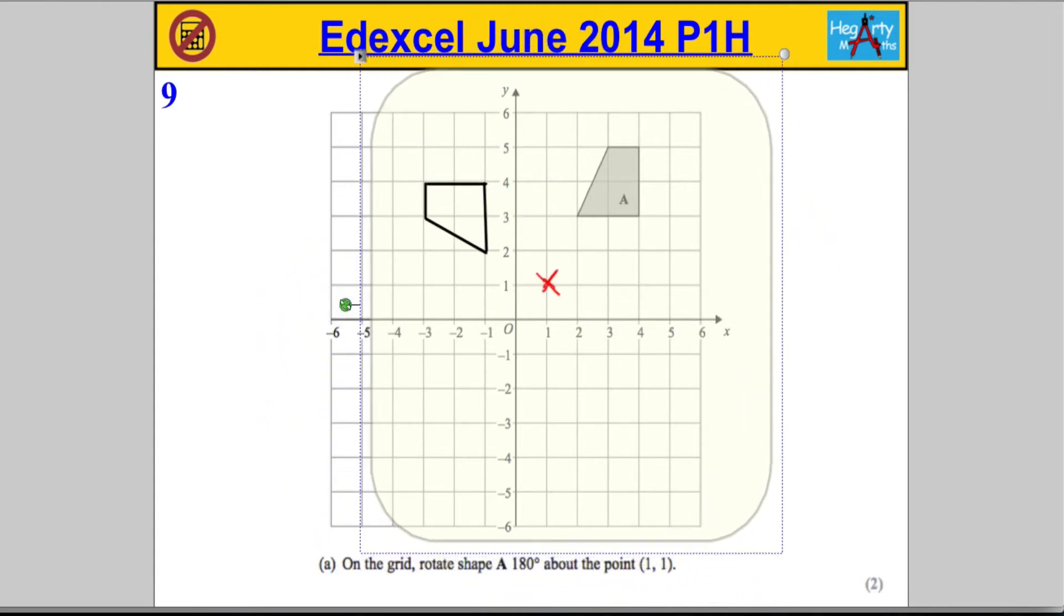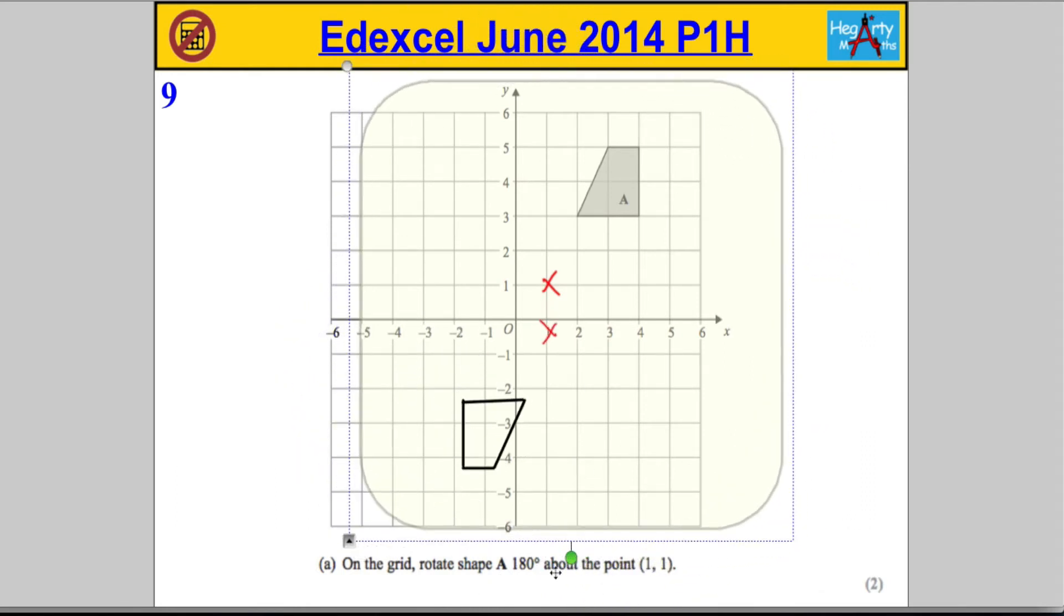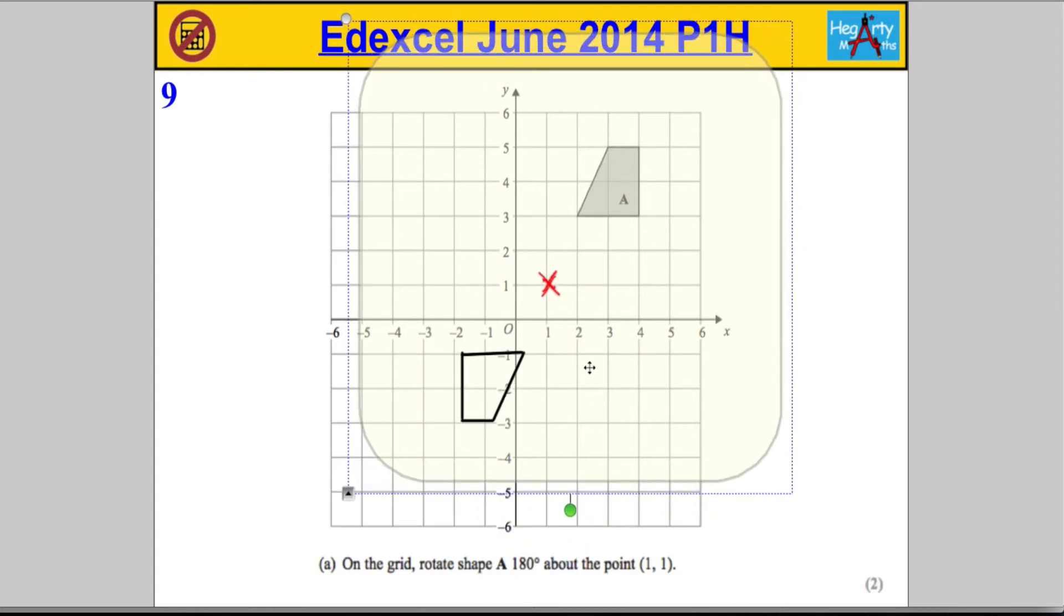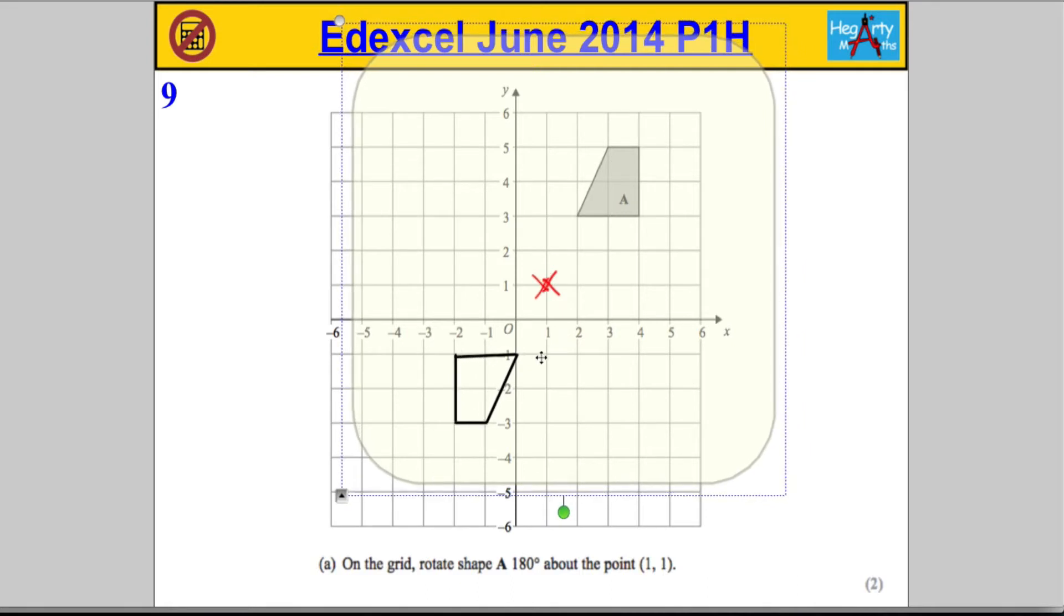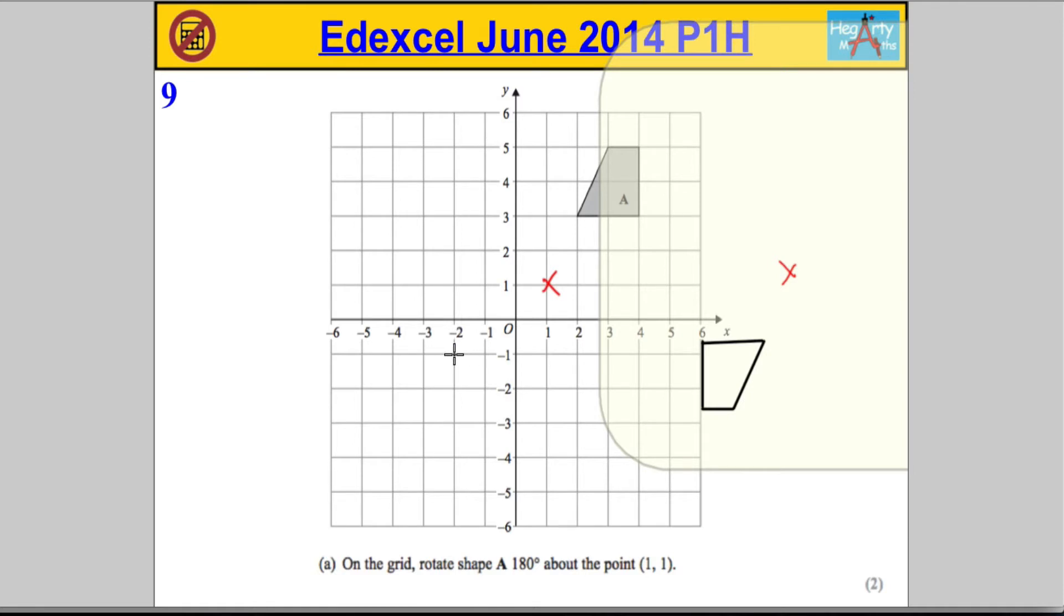Once more - I'm using the corners of the tracing paper to help me get 180 degrees. Make sure that's lined up where it should be. You can see where the tracing paper has moved the shape to. I'm going to move away the tracing paper and now complete the shape.